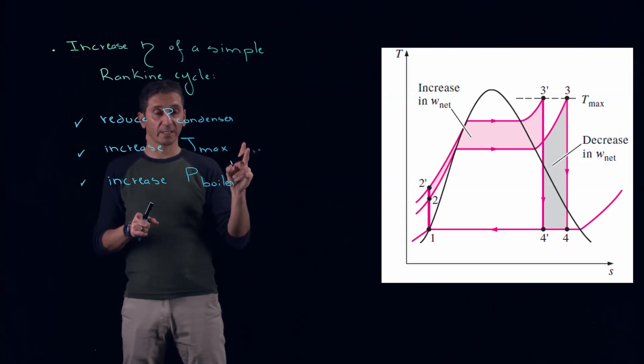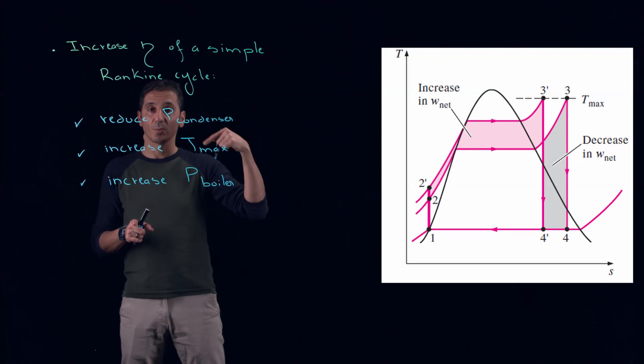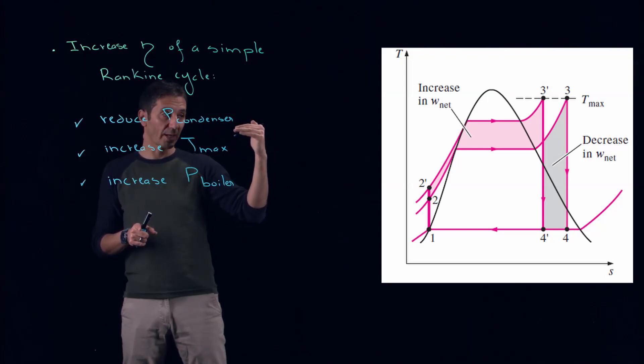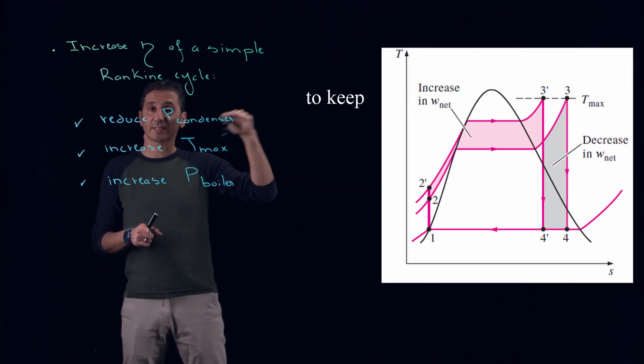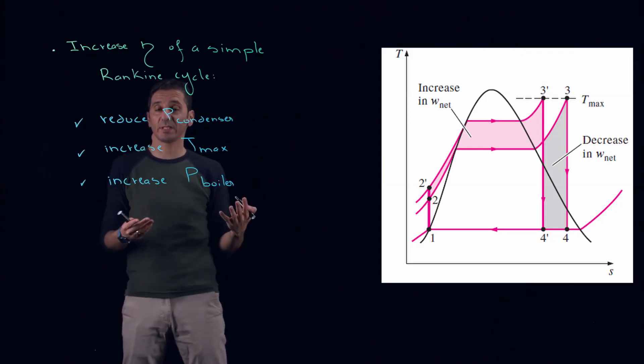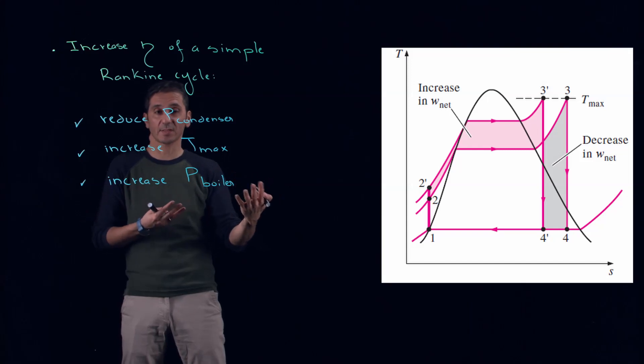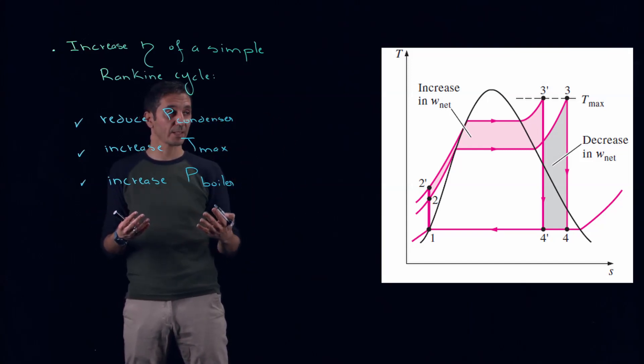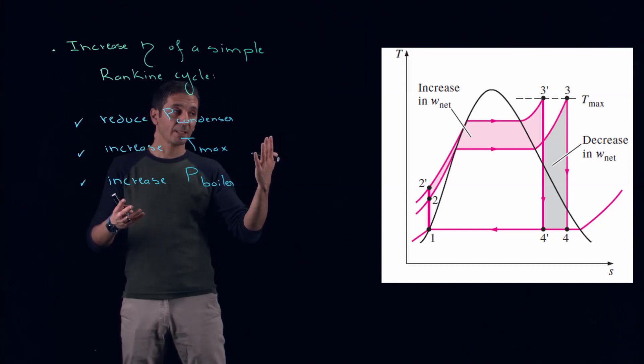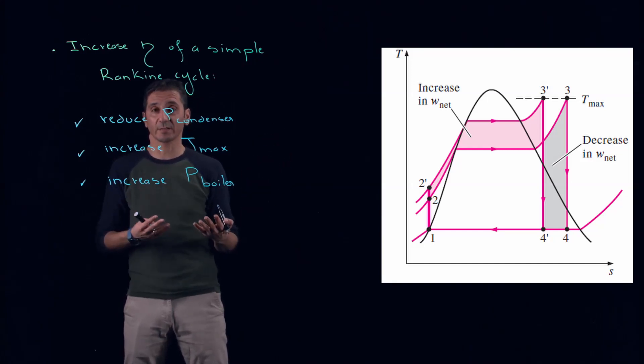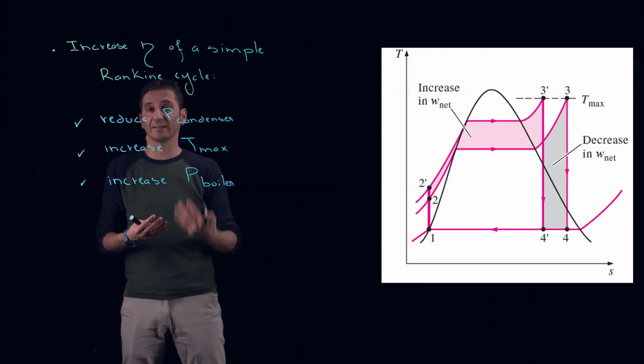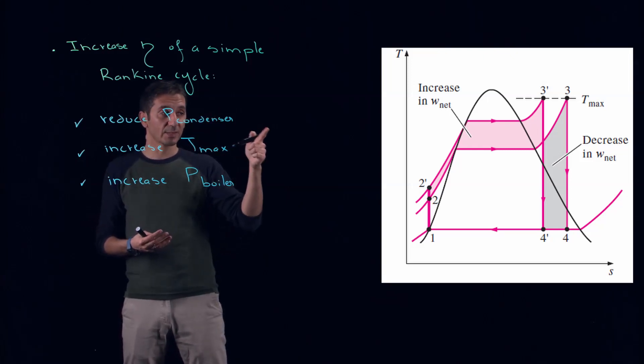And we have to be fair here, because by increasing Qin, or the pressure in the boiler, we have to keep the same maximal temperature. Otherwise, we will be changing two parameters at the same time: P in the boiler and Tmax. By doing this, we don't actually know if the efficiency will go up, because both terms, work net and Qin, are increasing. But we see that there is a warning here. We have to flag the fact that quality is going down, which we will have to check.